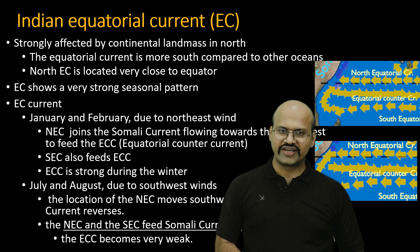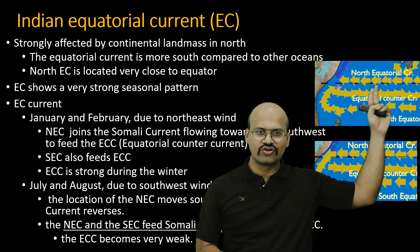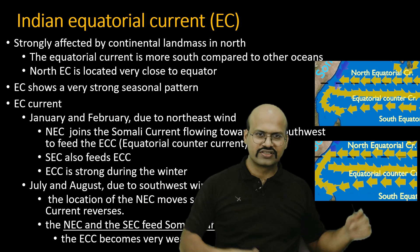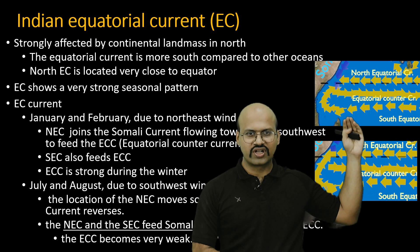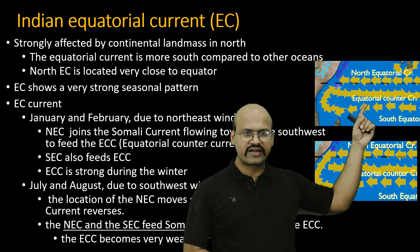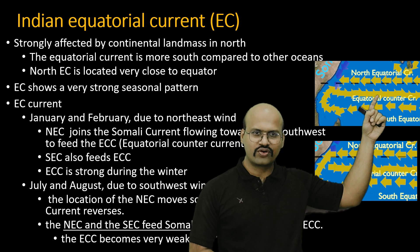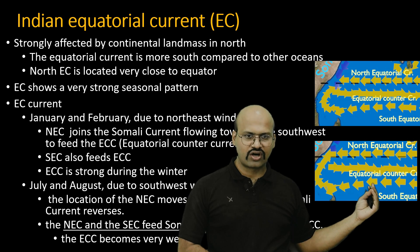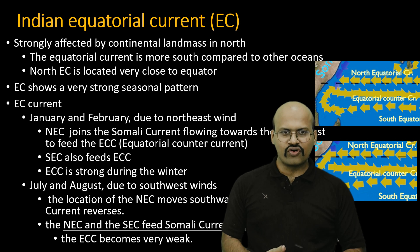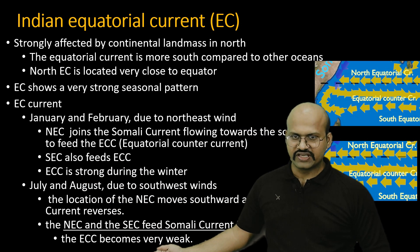The Indian equatorial currents are strongly affected by the continental land mass in the north, so the north equatorial current flows very close to the equator while the south equatorial current flows a little farther away. There is a strong seasonal pattern: in winter the south equatorial current, north equatorial current, and Somali current all feed the equatorial counter current, making it strong; in summer the south and north equatorial currents supply water to the Somali current instead, making the counter current weak.